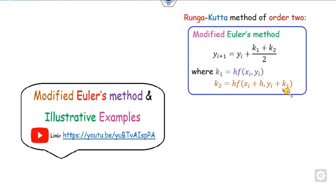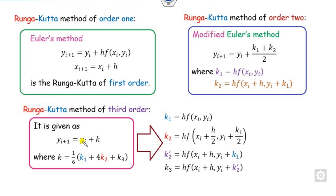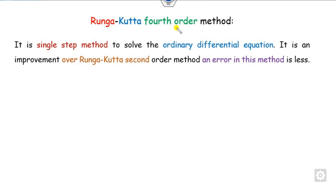Remember that k1 is defined here. There is also a Runge-Kutta third order where the capital K is defined as a weighted average: k1 + 4k2 + k3, divided by 6, where k1, k2, k3 are calculated as shown. Based on this family of Runge-Kutta methods, we will now define the Runge-Kutta fourth order.